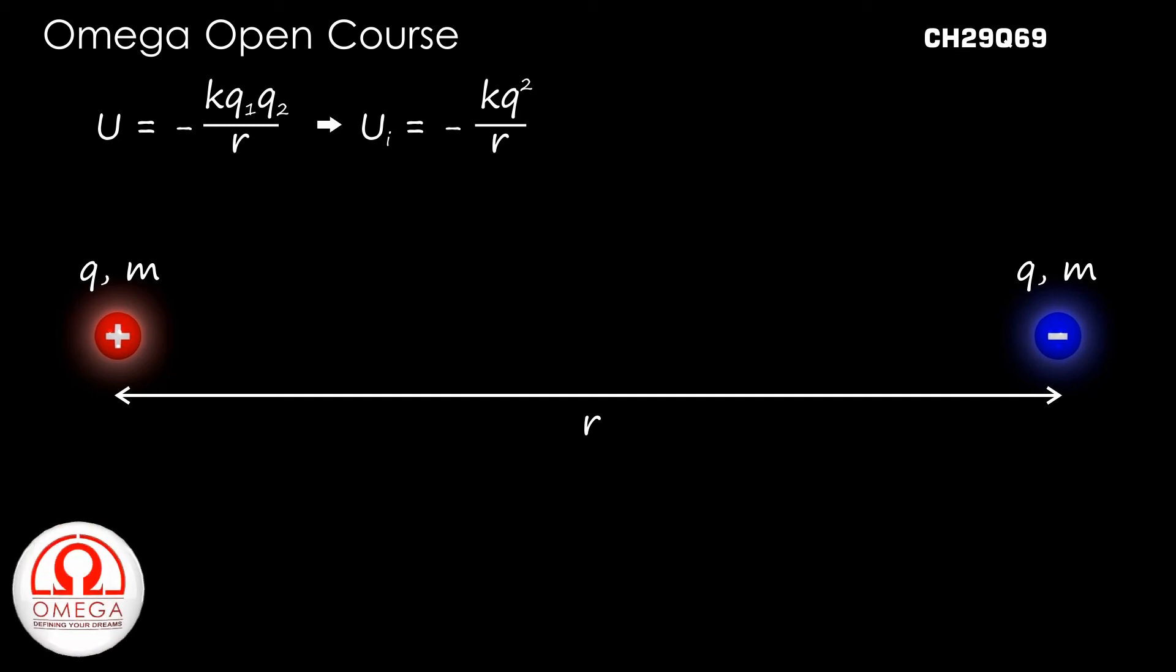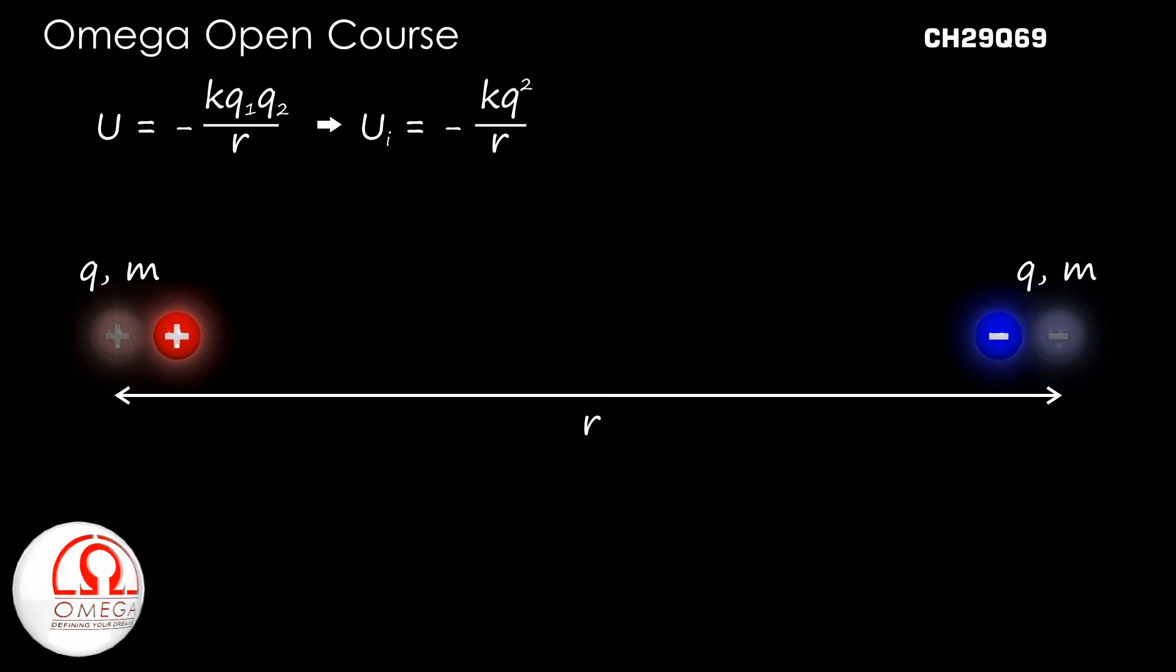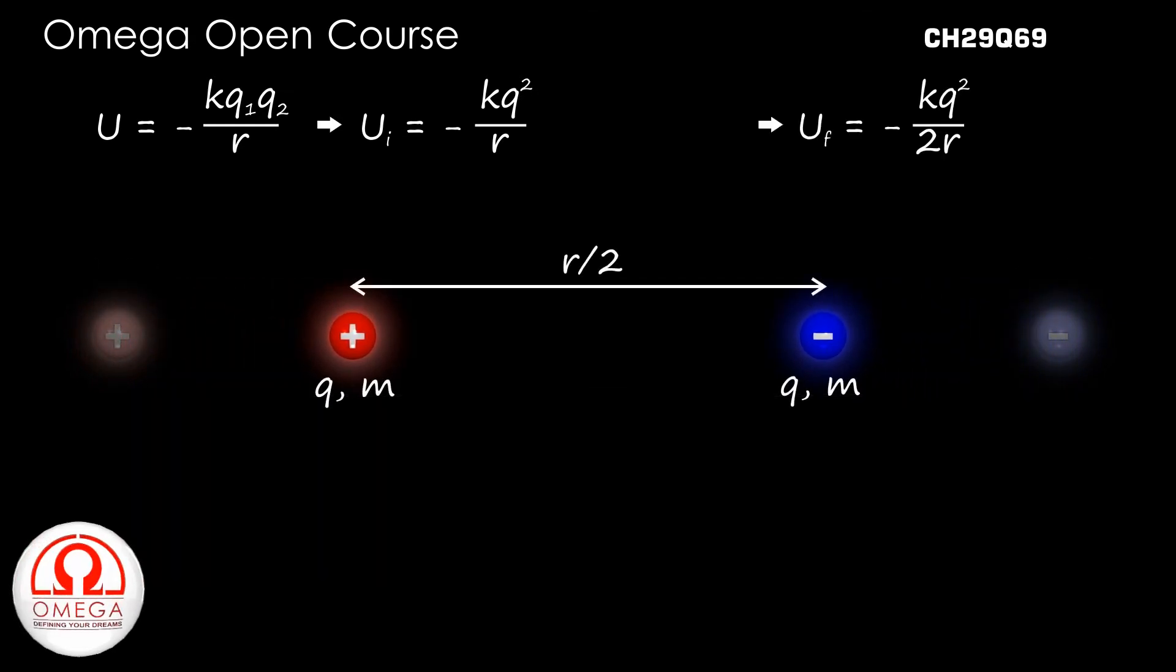When the separation between the particles is reduced to half its initial value, the potential energy of the system becomes -2KQ²/R.